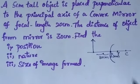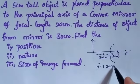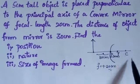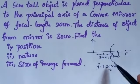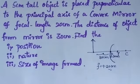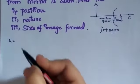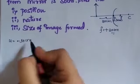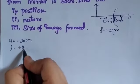One thing to remember: the given mirror is a convex mirror. For a convex mirror, the focal length will be plus 20 cm, because the focal point is considered on the right side of the mirror. So U is always negative: U = −30 cm, and F = +20 cm.